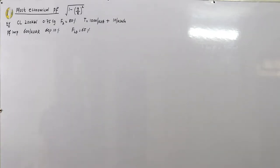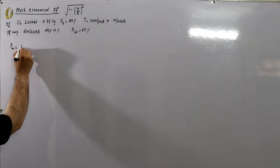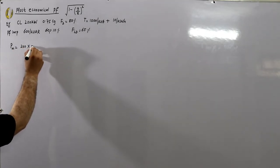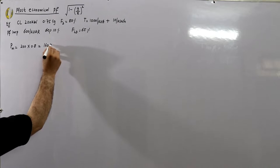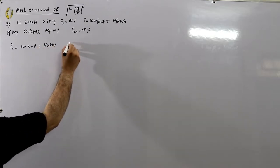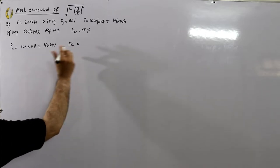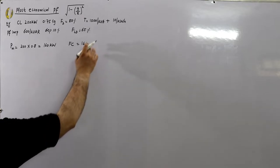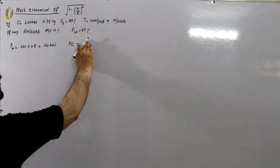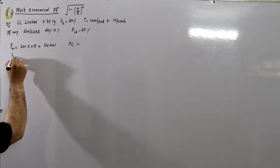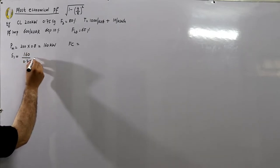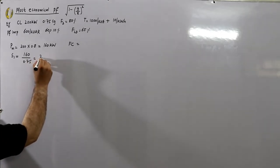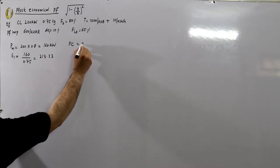For the current situation first, the maximum demand is the connected load multiplied by the demand factor, which gives 160 kilowatts. The fixed charges are based on kVA, so find the kVA: S₁ = 160 kilowatts divided by power factor 0.75, which gives 213.33 kVA.